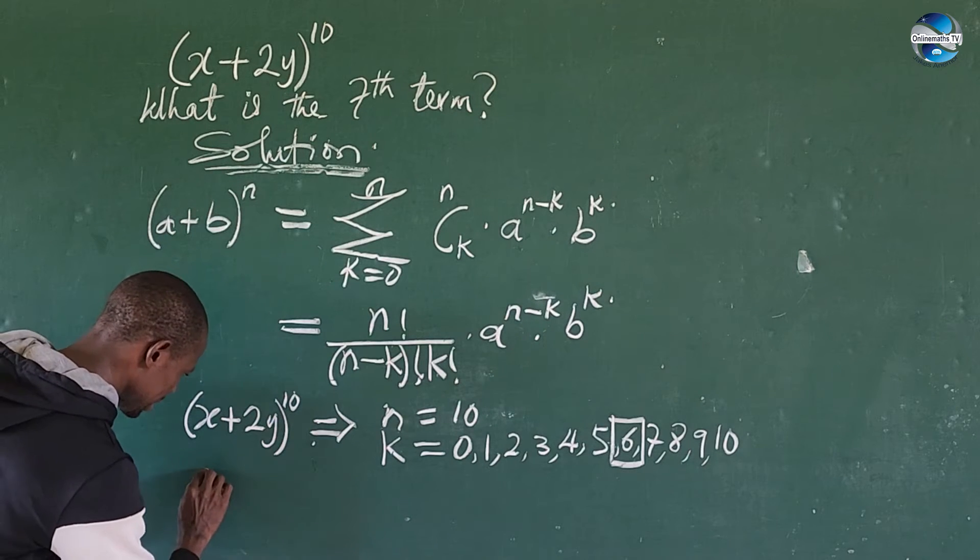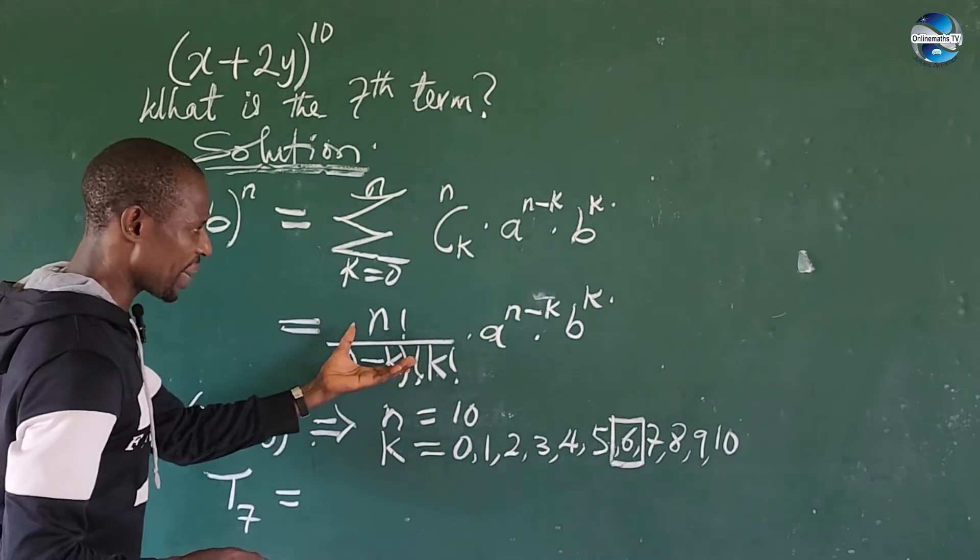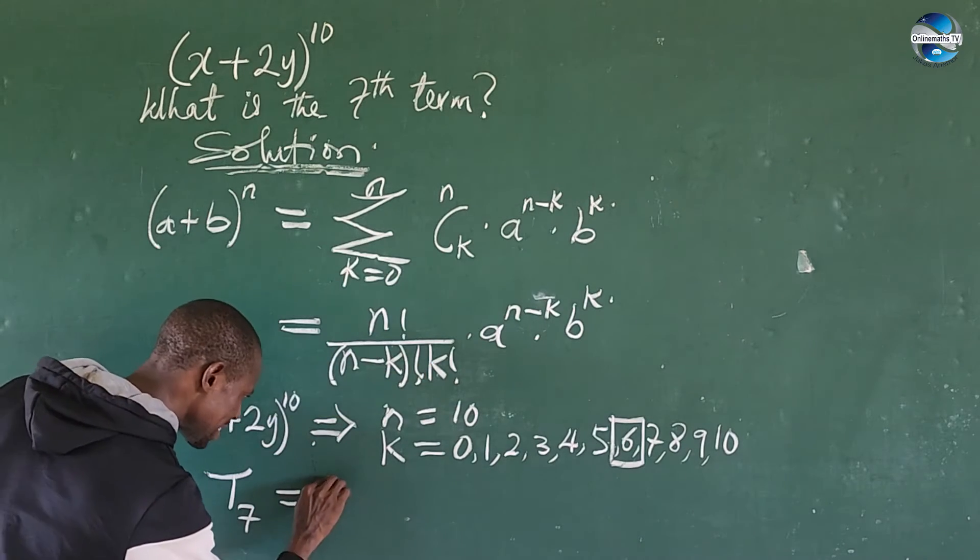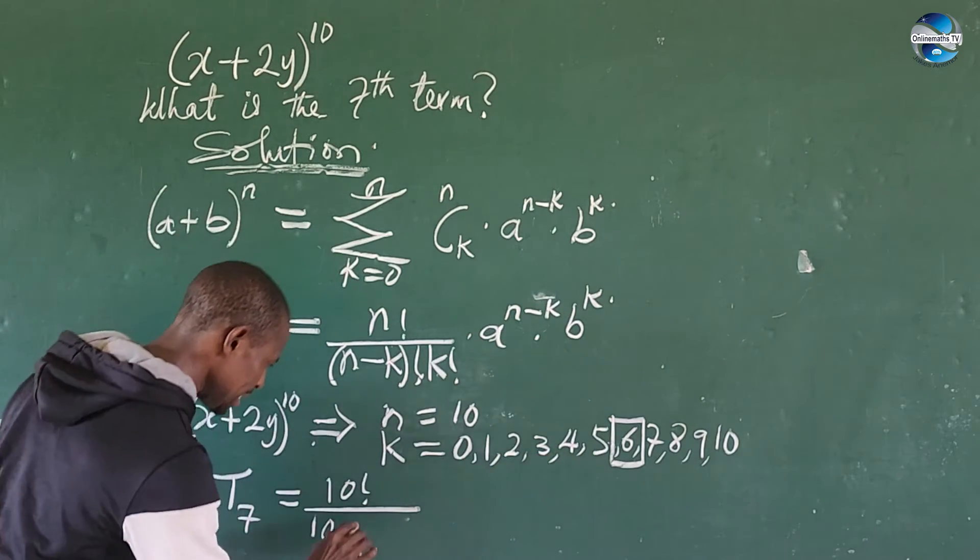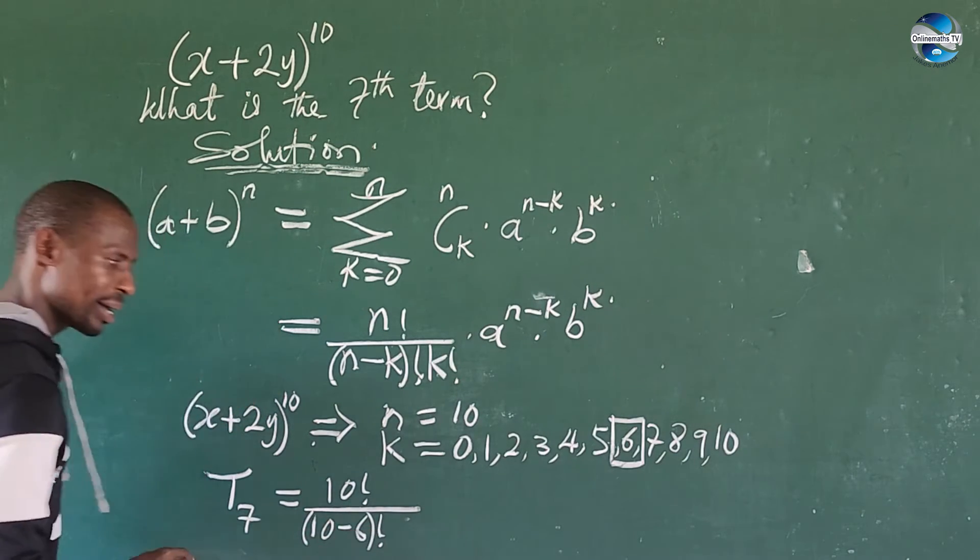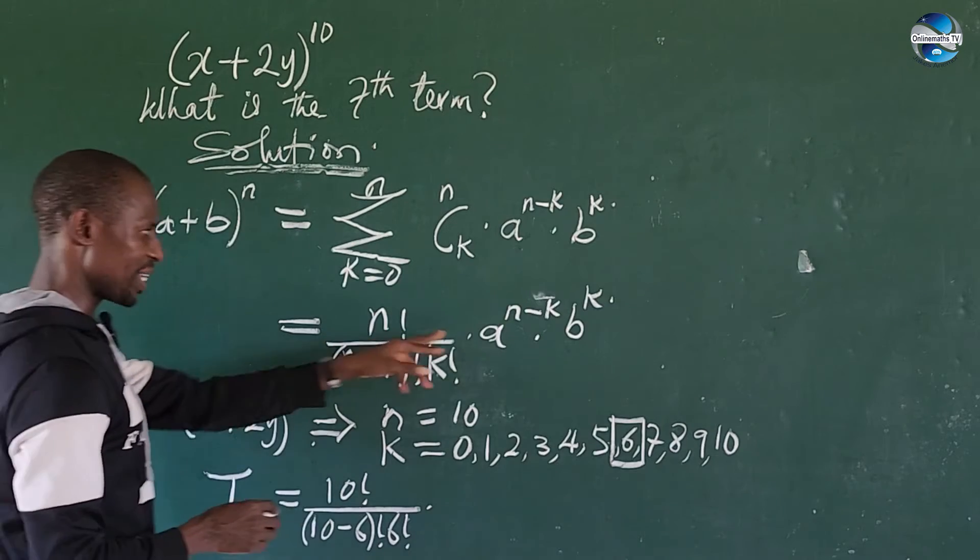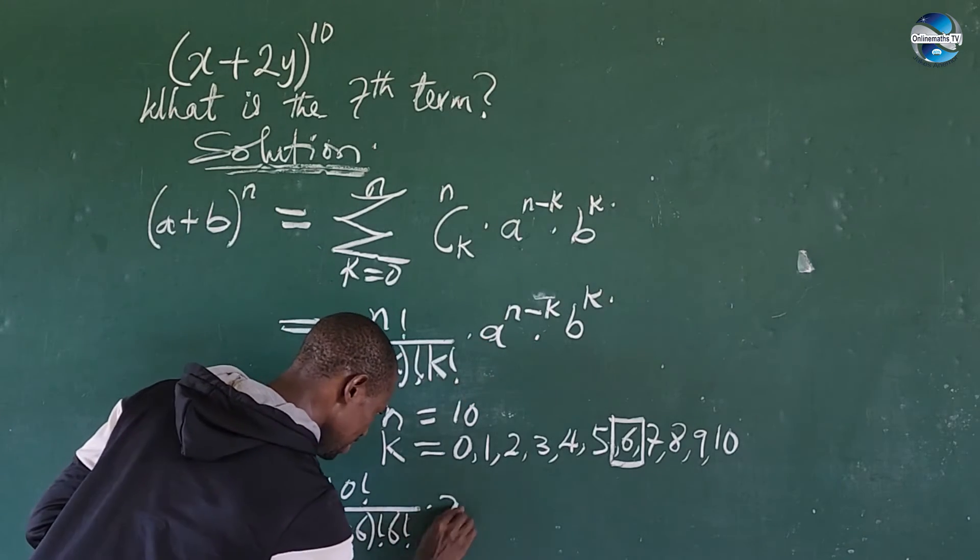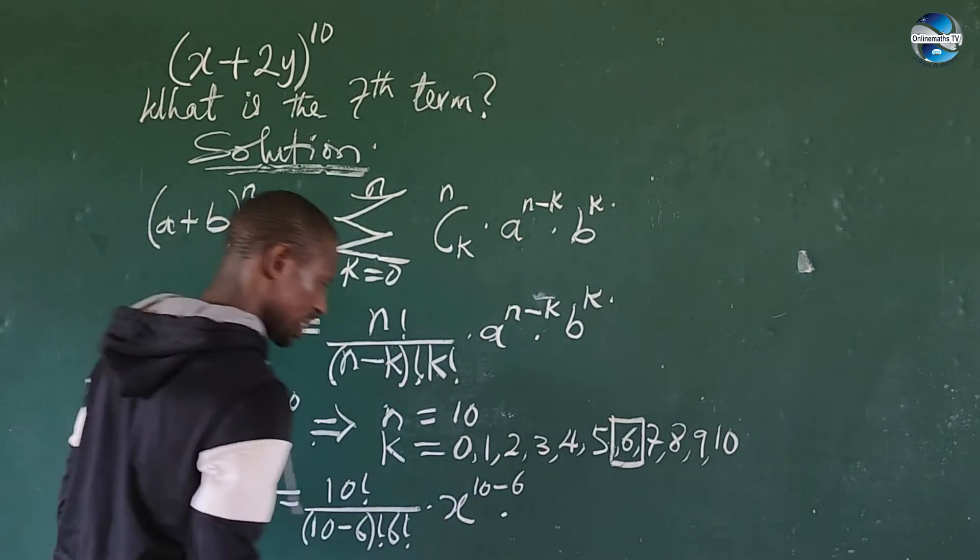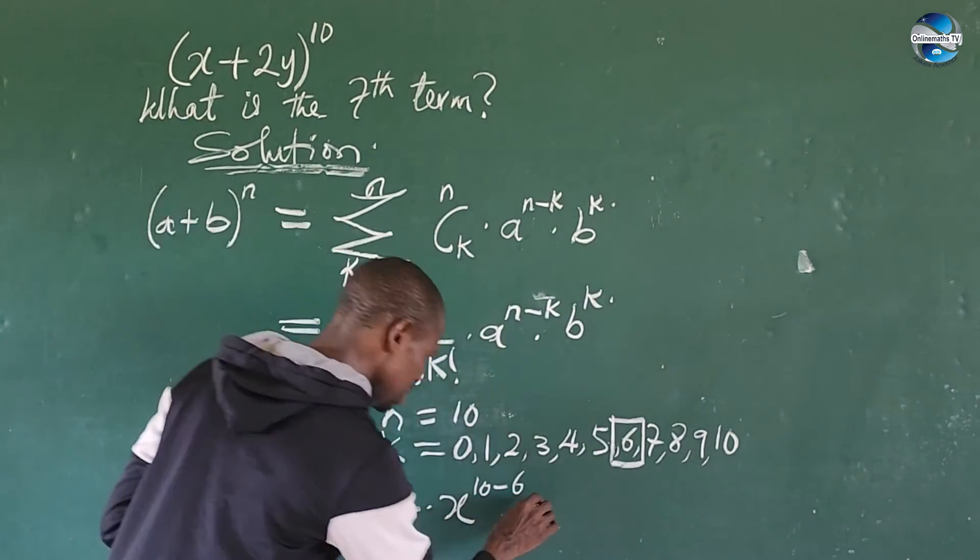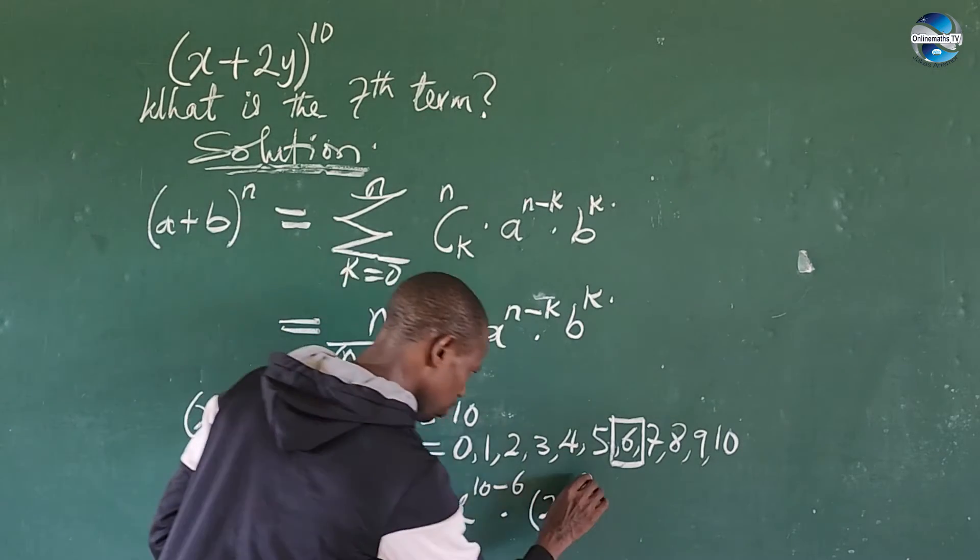So for the seventh term, we are going to have T7. T7 will now be equal to, we are using the binomial expansion now. So we're going to have 10 factorial over (10 - 6) factorial times 6 factorial, times the first term which is x to the power of (10 - 6), times our second term which is 2y in brackets, all to the power of k. And our k is 6, so all to the power of 6.